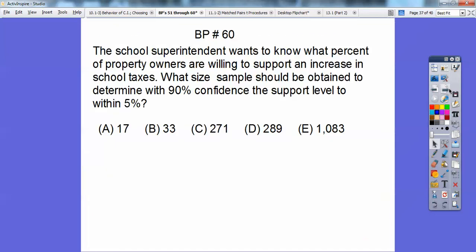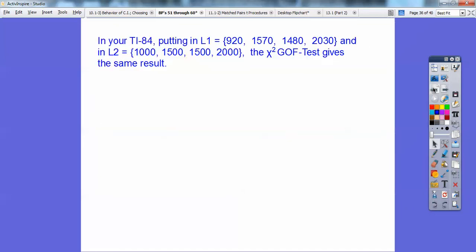All right, so in your TI-83s or 84s, you put them in list one, your observed counts, in list two, your expected counts, and then go down to your chi-squared goodness of fits, and you should get the same results right there.